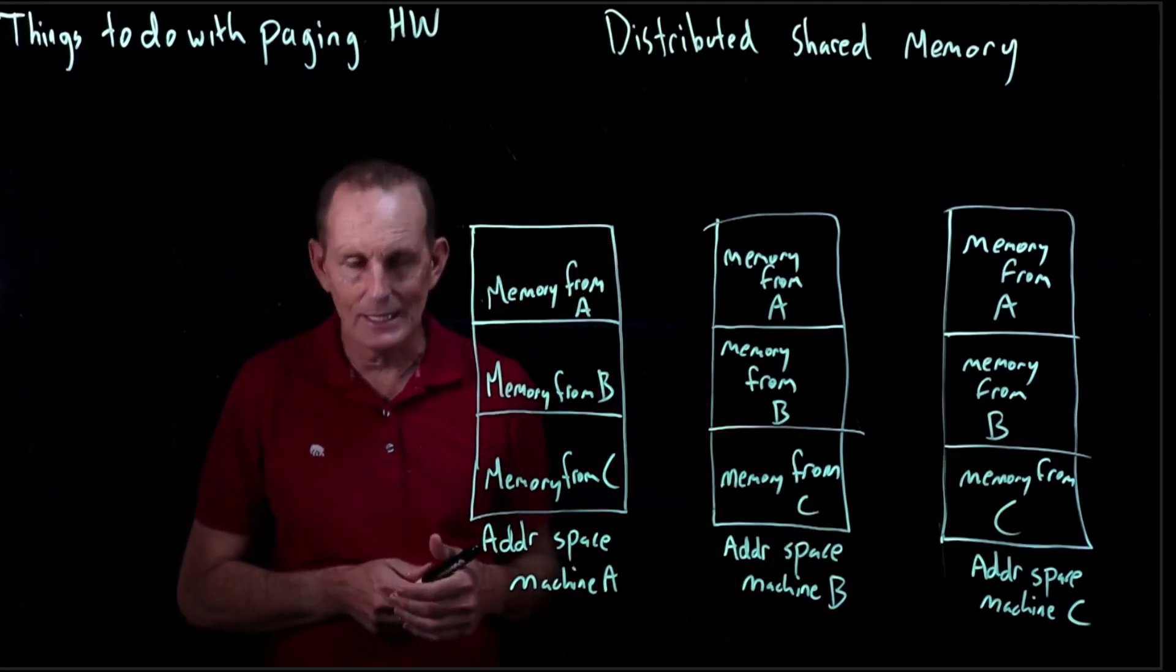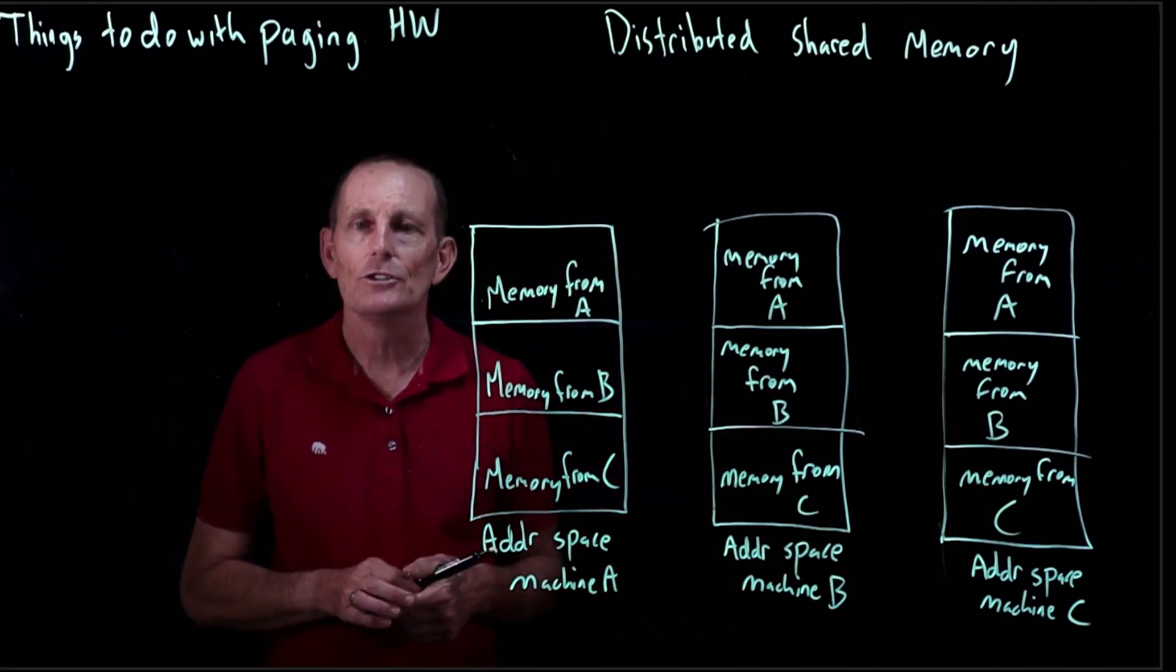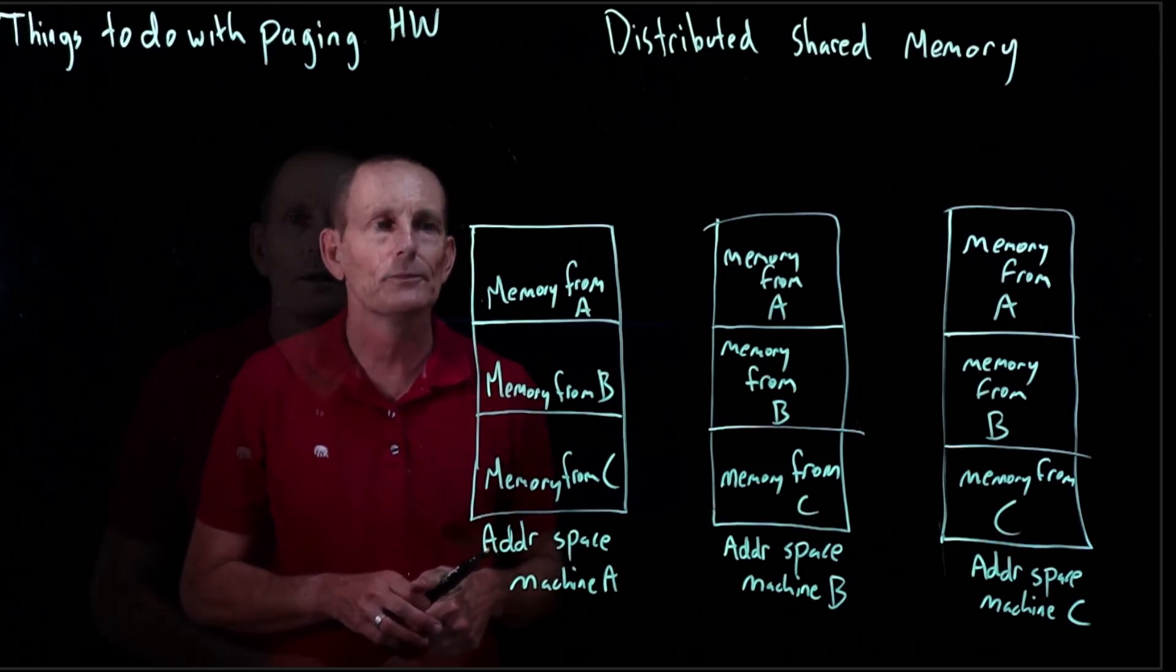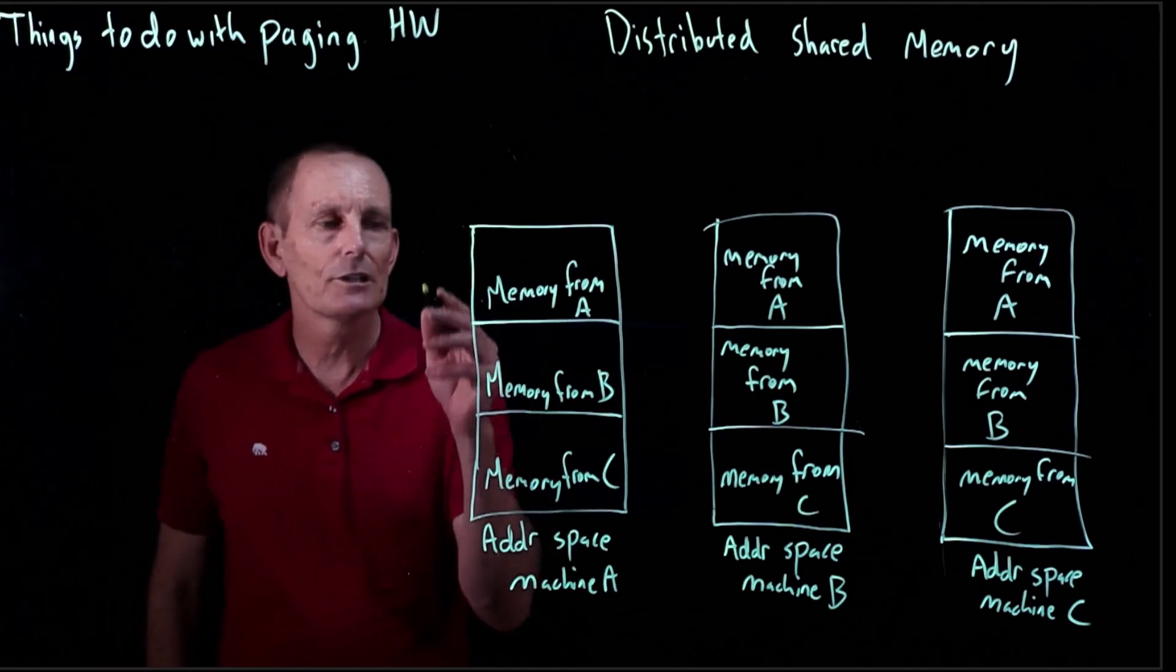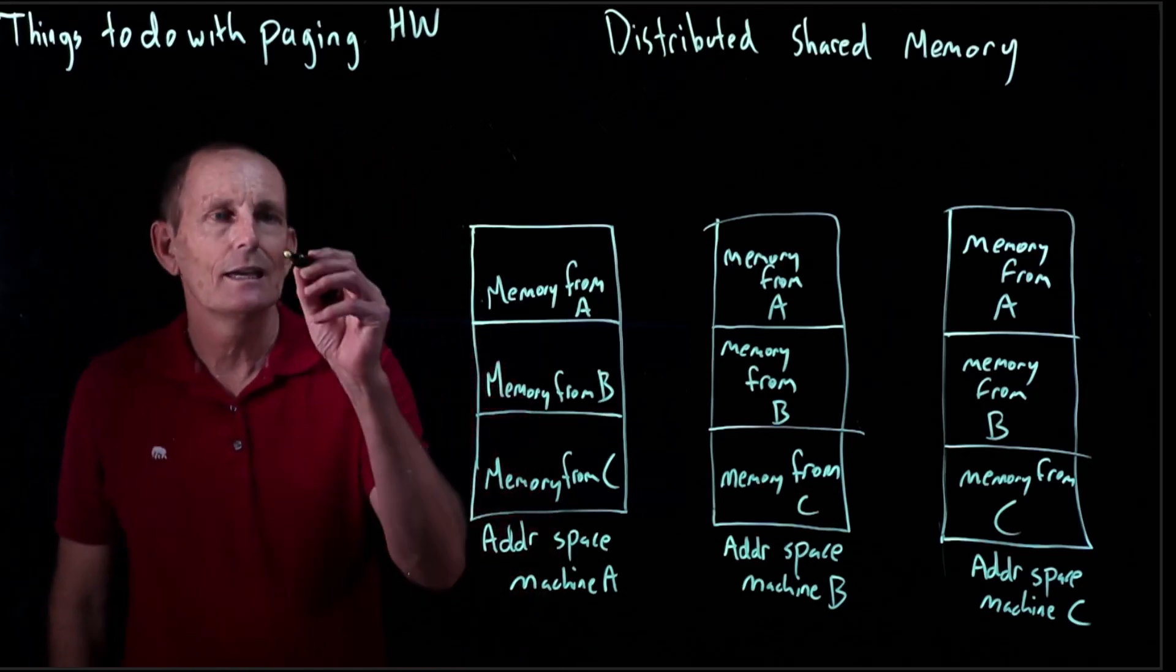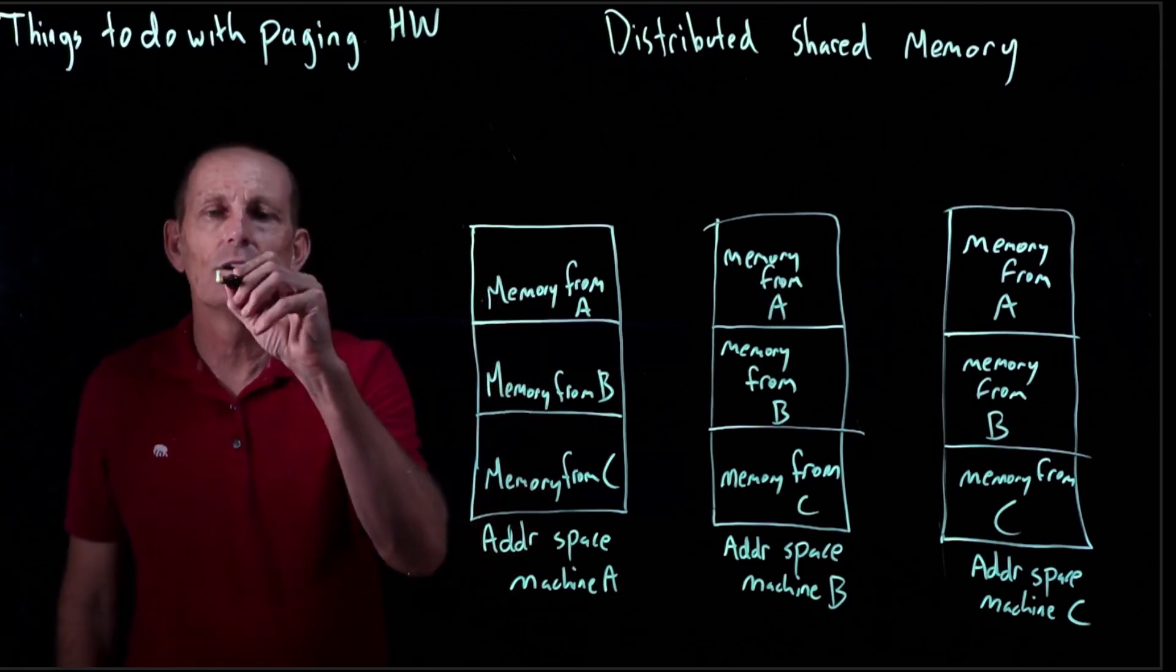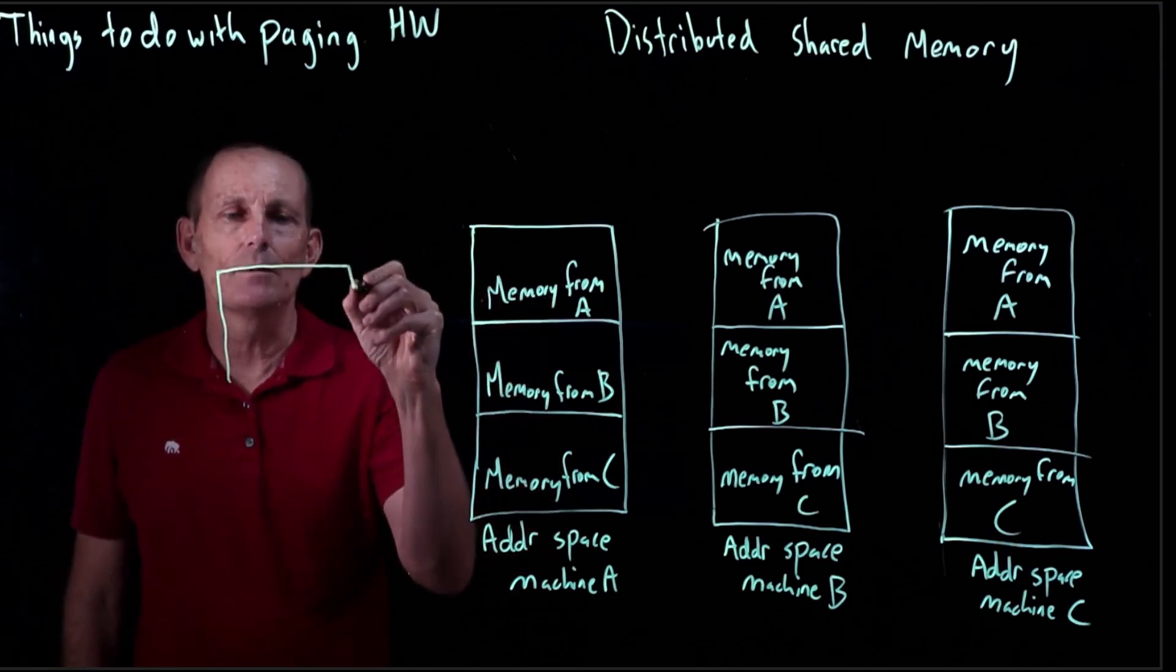What happens is we use paging hardware to make it look like remote memory is local. So the idea is let's say we look at machine A and look at its page table entry. Let's say for a second these are just single pages to make life easier. So we'd have three page table entries.